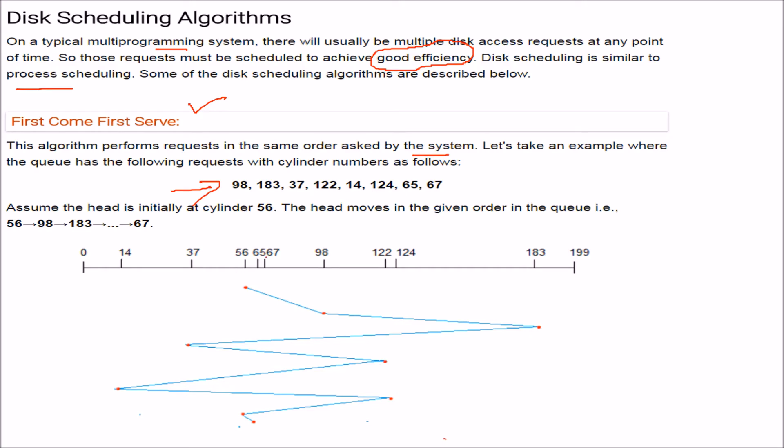98, 183, 37 like this. Assume that the head is previously here, 56, at 56. So the head moves in the given order in the queue as given here. First it is at 56.